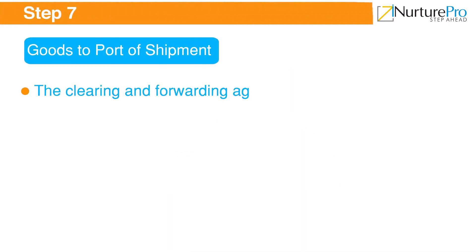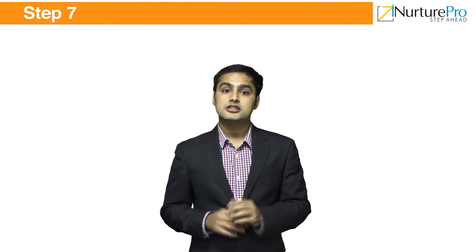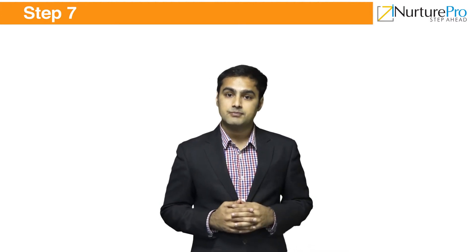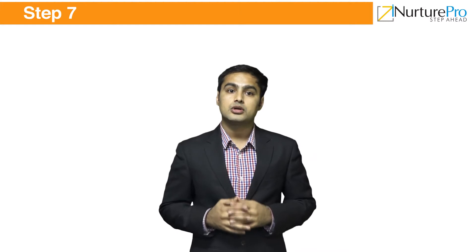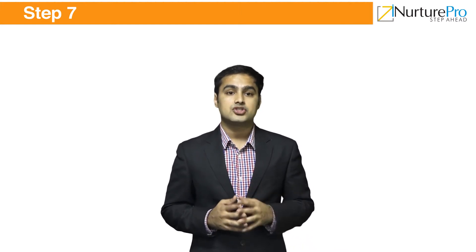On receipt of the inspection certificate, the exporter appoints clearing and forwarding agents. These agents handle packing, marking and labeling of consignments, arranging transportation from warehouse to port, overseas shipment, clearance of cargo from customs, and procuring transport and other documents. The exporter must provide these agents with documents including: commercial invoice (8 to 10 copies), customer declaration form, packaging list, original letter of credit, GR form (original and duplicate), AR4 or AR4A form (original and duplicate), and GP1/GP2 and railway receipt or lorry waybill as applicable.